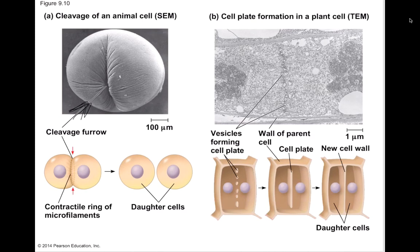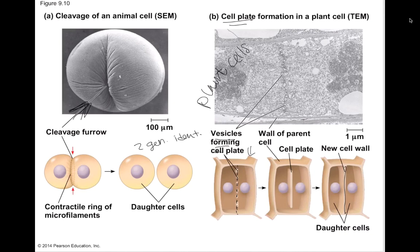The cleavage furrow is a contractile ring made of microfilaments that forms and pinches off to create two genetically identical daughter cells. In plant cells, a cell plate is utilized instead. Because plant cells have a cell wall, you have to form the new cell wall to split the cells — little vesicles form the cell plate, and once they're fully formed you have your new cells.